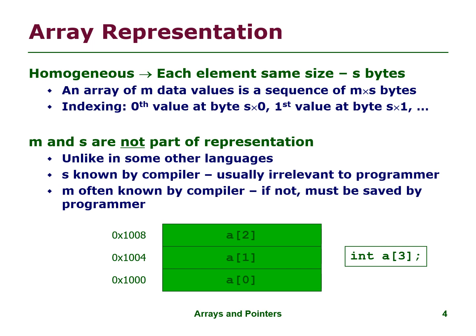Array representation is homogeneous — each element is the same size, S bytes. An array of M elements of S bytes each is a sequence of M by S bytes. Indexing starts from zero. M and S are not part of the representation, unlike in some other languages. M is usually known by the compiler or must be saved by the programmer. The diagram below represents an array.